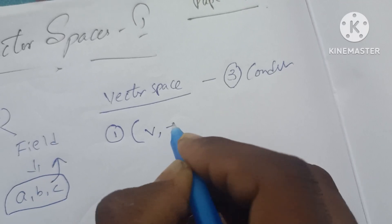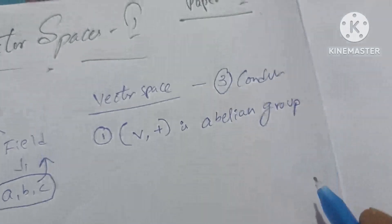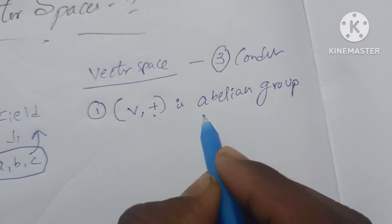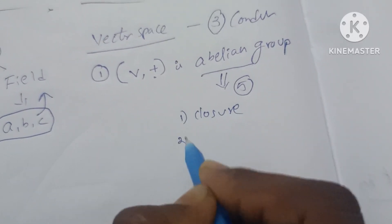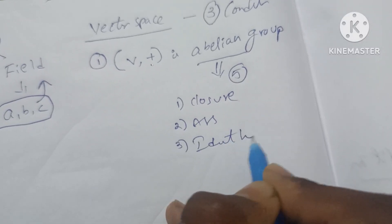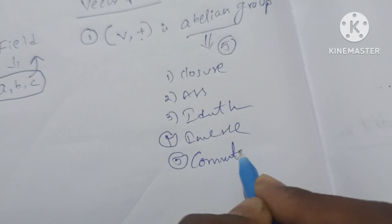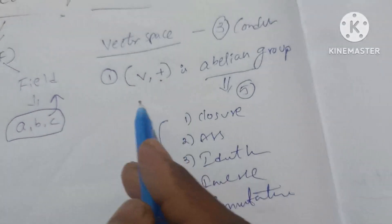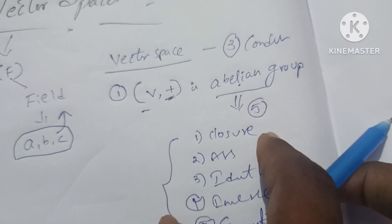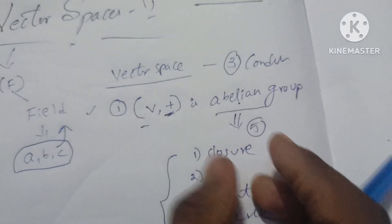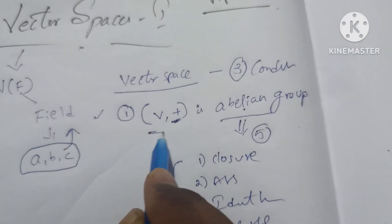First condition: the vector with respect to addition is an abelian group. An abelian group with respect to the binary operation addition satisfies five laws: closure, associativity, identity, inverse, and commutativity. This is the first condition — vector with respect to addition is an abelian group.